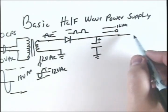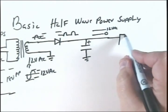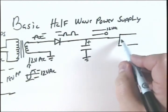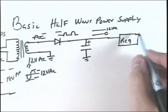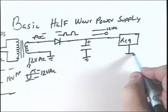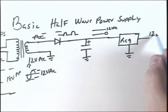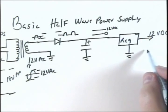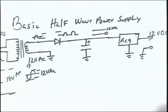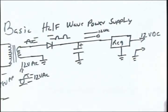If we want to get fancier, we can actually put in a device that's called a regulator. It's a silicon device, solid state, and it is designed to keep the voltage at exactly 12 volts DC. Between here and ground, we could then power our transistor radio or whatever we wanted to. That's a basic half-wave power supply.